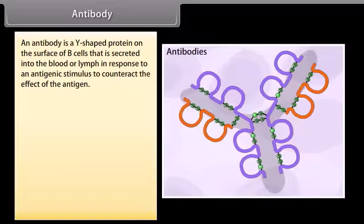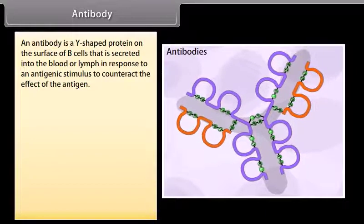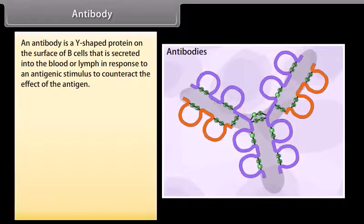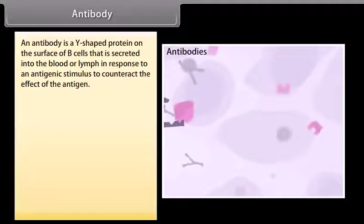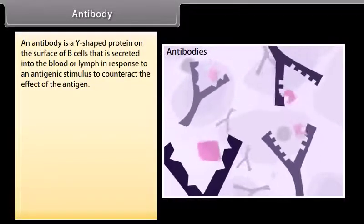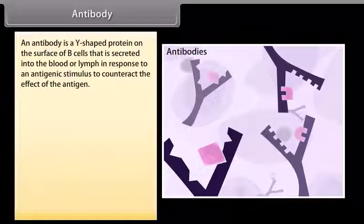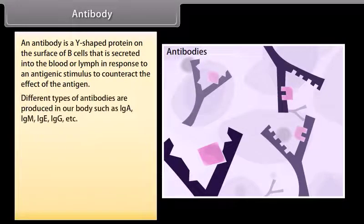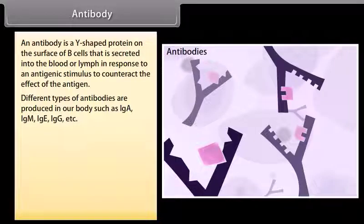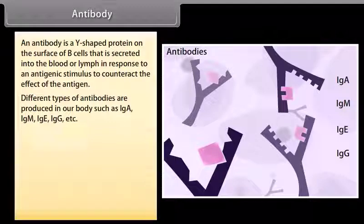An antibody is a Y-shaped protein on the surface of B-cells that is secreted into the blood or lymph in response to an antigenic stimulus to counteract the effect of the antigen. Different types of antibodies are produced in our body, such as IgA, IgM, IgE, IgG, etc.